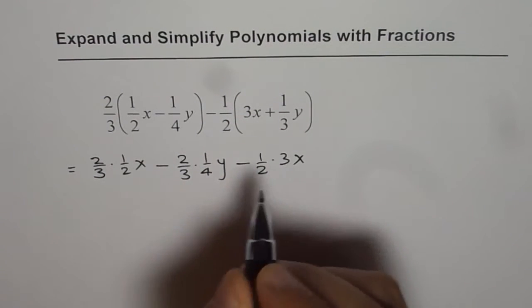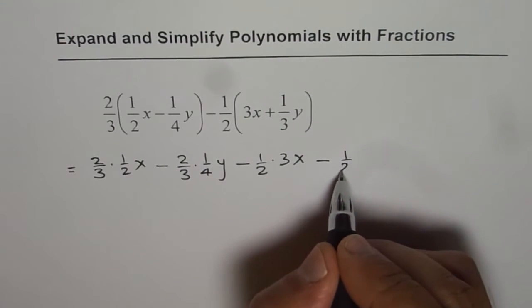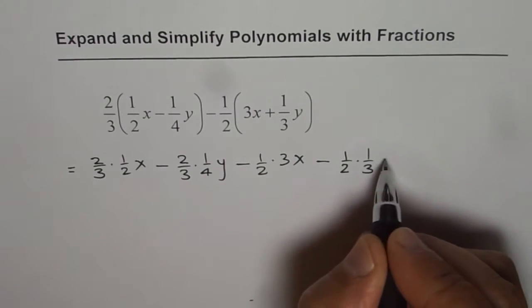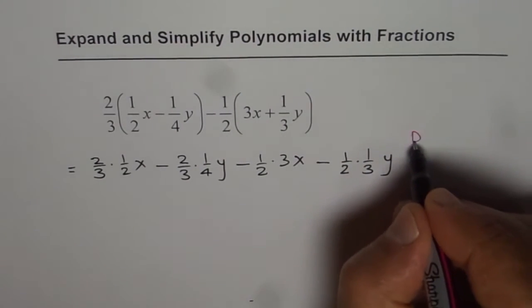Minus times plus is minus, so we get minus half times 3x. Minus times plus is negative again, so negative half times one-third of y. So that is the first step by application of distributive property.